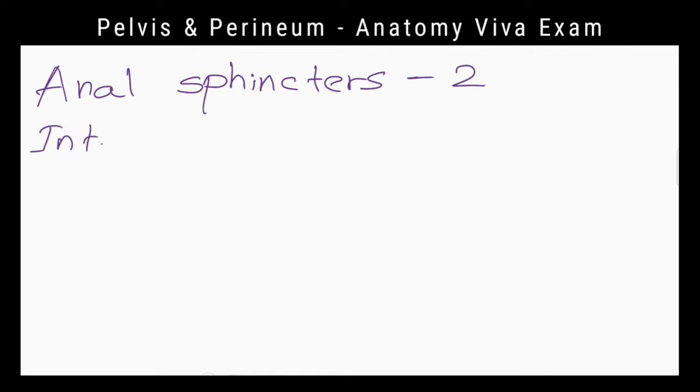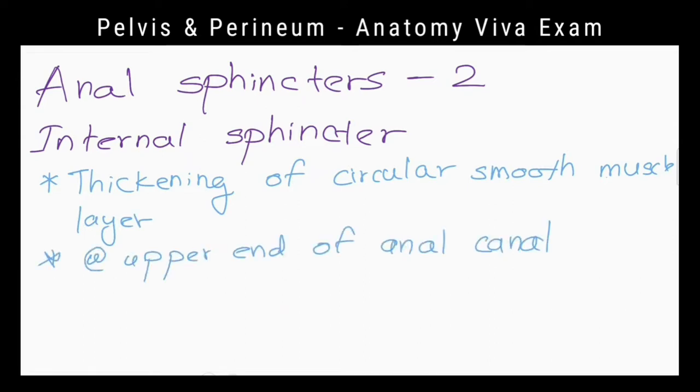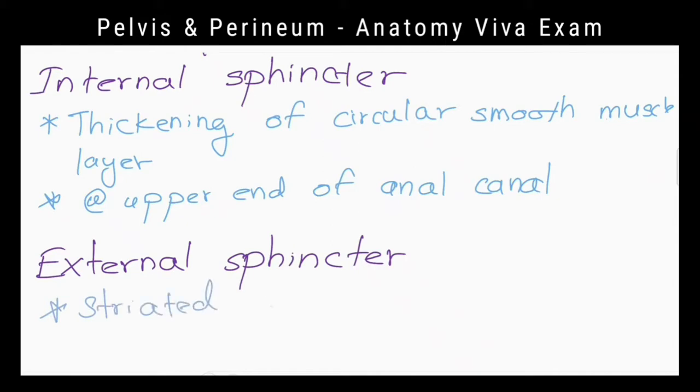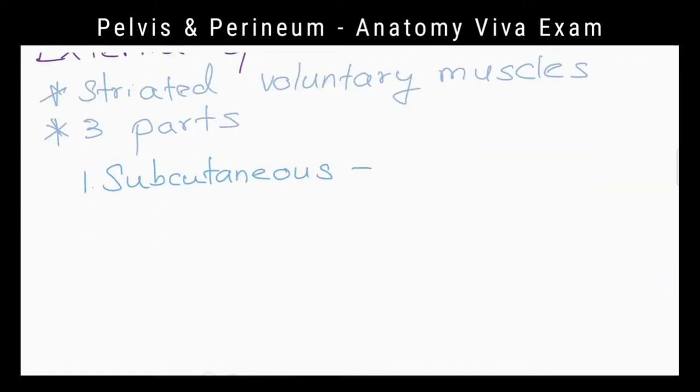Describe anal sphincters. There are two anal sphincters: internal sphincter and external sphincter. Internal sphincter is formed by a thickening of circular muscle layer at upper end of anal canal. It is enclosed by external sphincter which is formed by striated voluntary muscle.